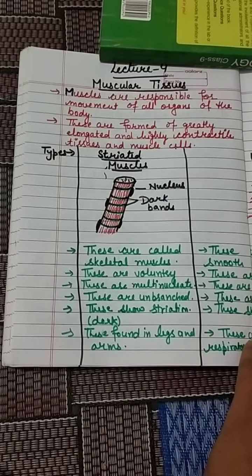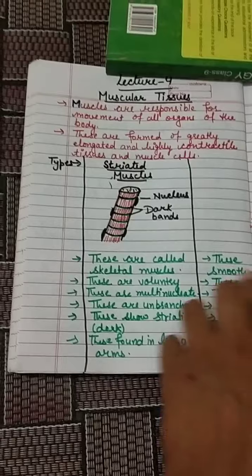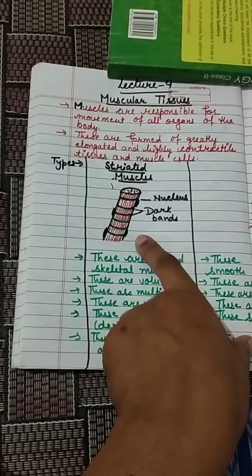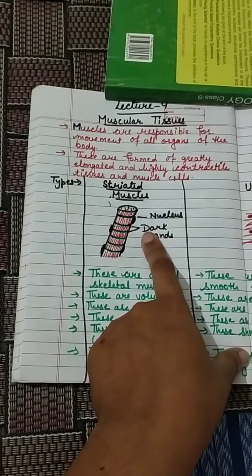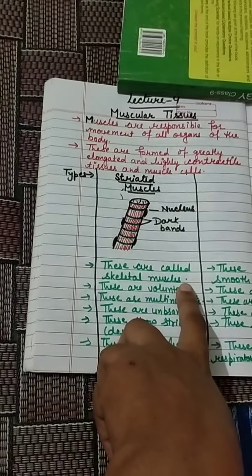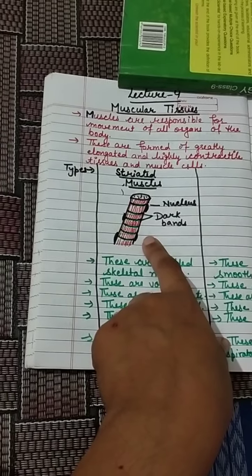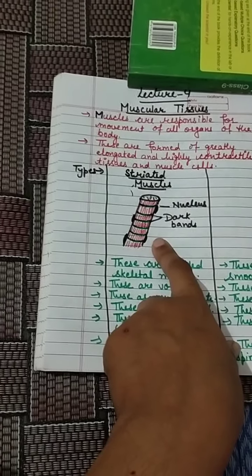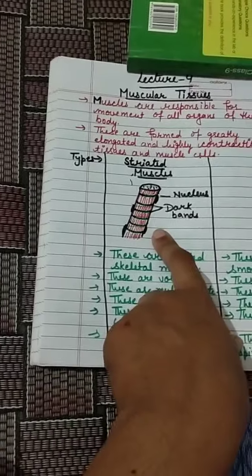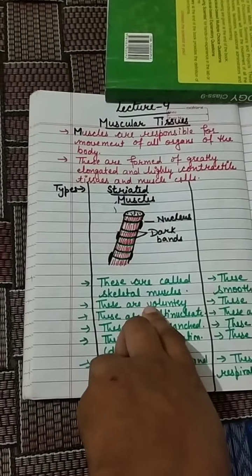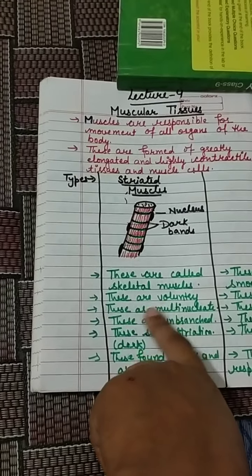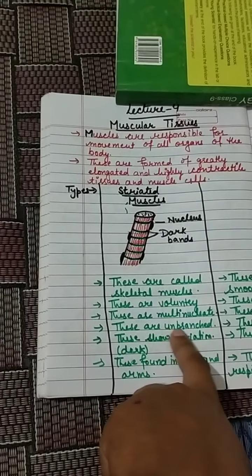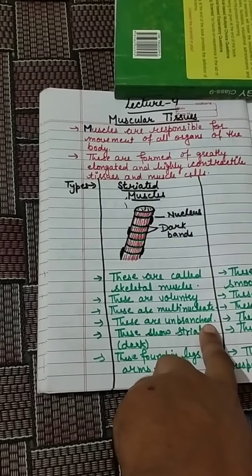Muscle fibers are of different types. The first one is the striated muscles. In the diagram of the striated muscle, you can see the nucleus and dark and light bands — this is called striated muscle. It is also called skeletal muscle because these muscles are connected with the skeletal system, meaning they are present in the legs and arms. These are voluntary because they work on our will, and they are multinucleated, meaning they have more than one nucleus.